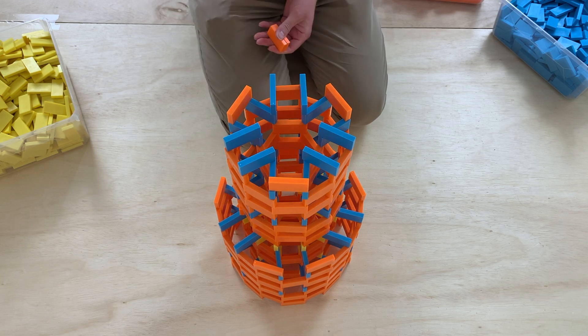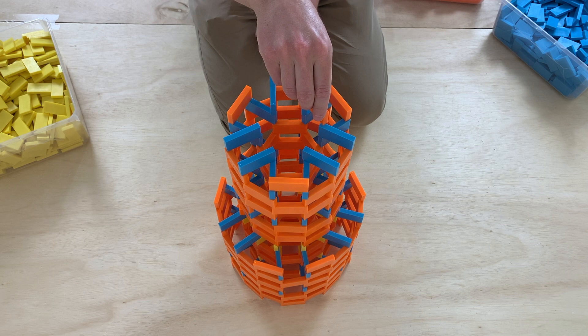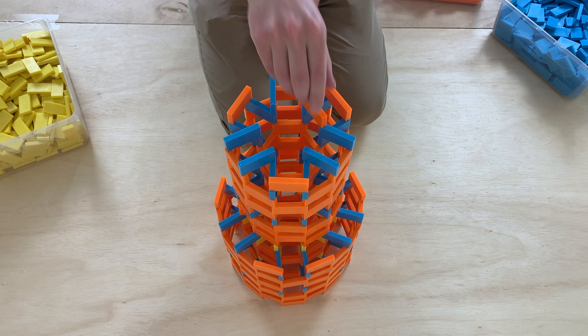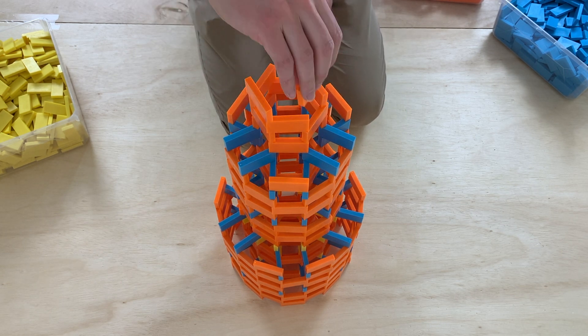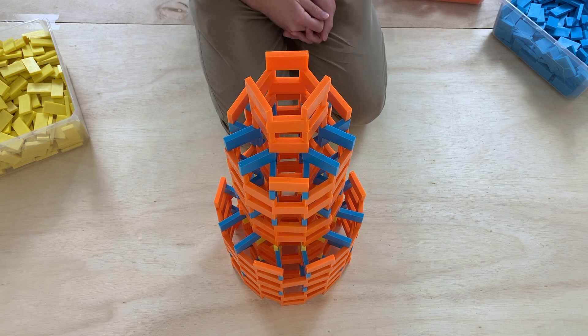We can also continue to thin it out if we'd like by just building a regular hexagon tower on top of this. And there we go we have finished building this.